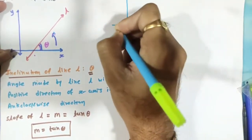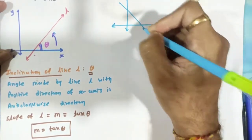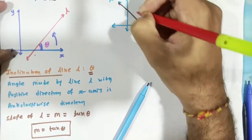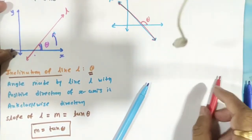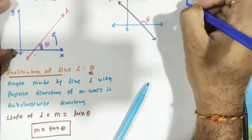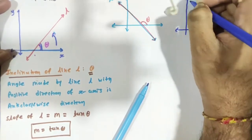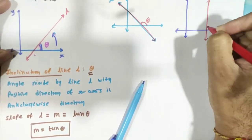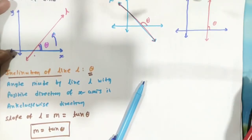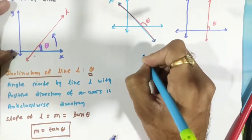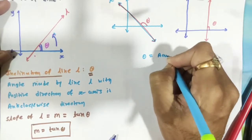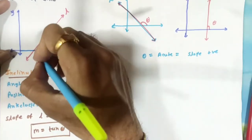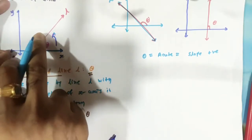Suppose a line is given like this — this is line L. For this case, this angle is theta. Sometimes the line may also be perpendicular to the x-axis, so theta is 90 degrees. For these different cases: if theta is an acute angle (theta between 0 and 90), then tan(theta) will be positive, so the slope of the line is positive.